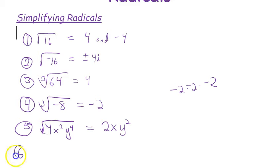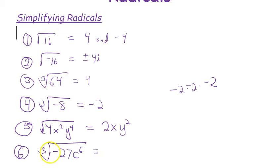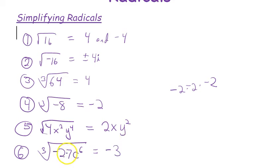Now a cube root example: the cube root of negative 27c⁶. Since it's a cube root with a negative number, the answer will be negative. What times itself three times gives 27? That's 3, so we have negative 3. For the exponent, divide by 3: c⁶ divided by 3 gives c². The answer is negative 3c².